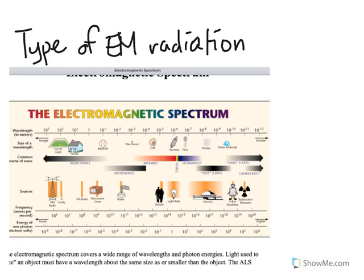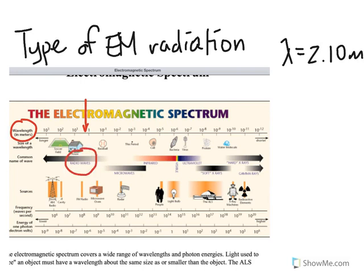Let's take a look at an example. Let's pretend that the wavelength of some electromagnetic radiation is around 2 meters, so 2.10 meters. Now, looking at the chart, if we see wavelength right here and we identify where 2.10 meters would probably be, it would probably be right around here somewhere. And notice that since this is a wavelength, that's where 2 meters would be. Notice that this type of electromagnetic radiation would be considered a radio wave.